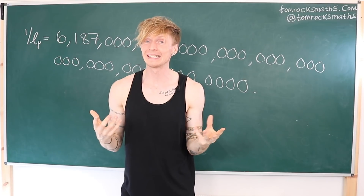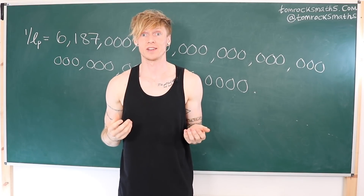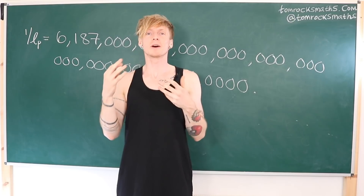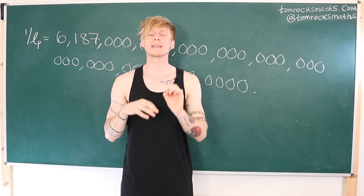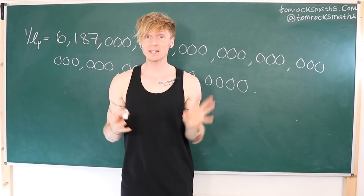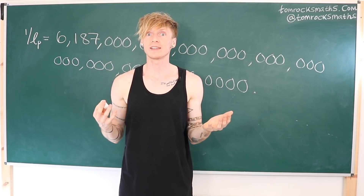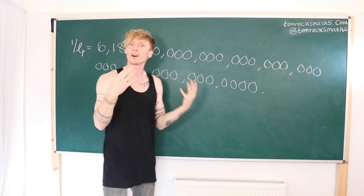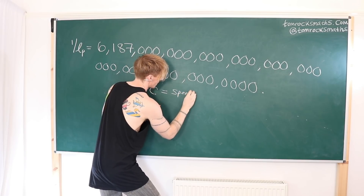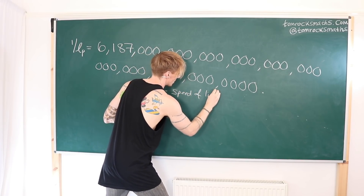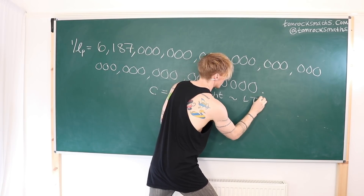This could maybe be a clue that a smallest meaningful length exists in our universe. So if we run with this and suppose we've convinced ourselves that a smallest length scale seems plausible, then why should it be the Planck length? To answer this question, we consider some of the most fundamental constants in all of physics. We start with c, which of course represents the speed of light — being a speed, it has units of distance over time.